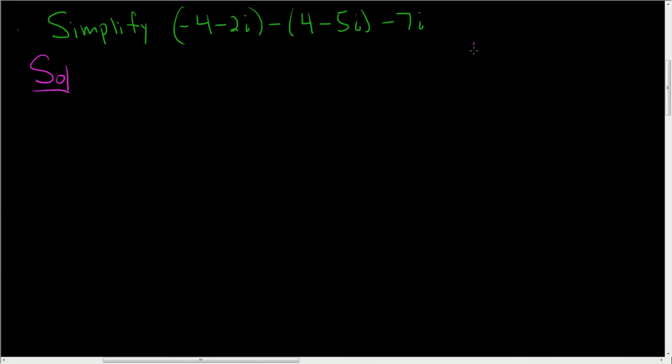So in all of this, i is actually equal to the square root of negative 1. And the reason we call it i is that it's called the imaginary unit.